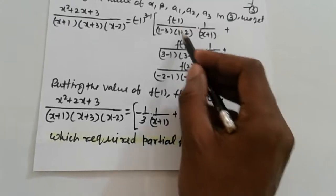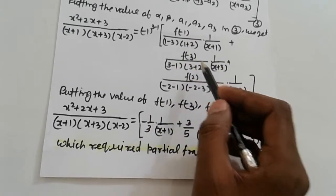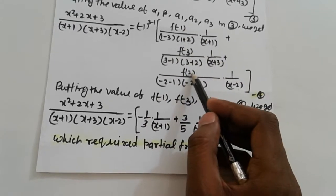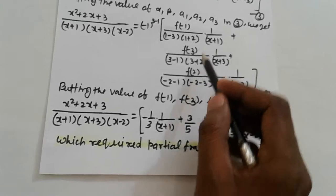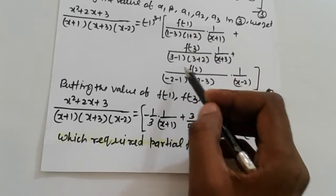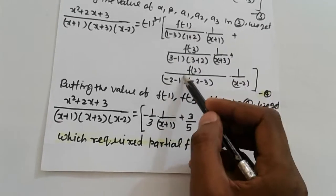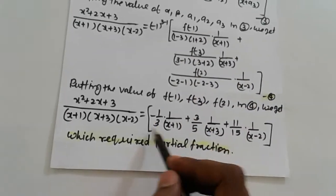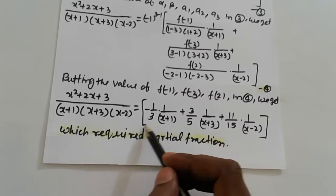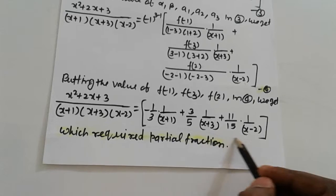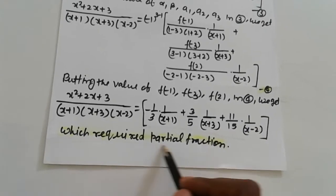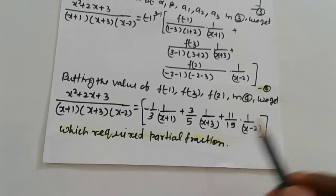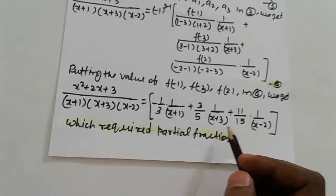Simplifying by putting the values of f of minus 1, f of minus 3, and f of 2, we get the final result, which is the required partial fractions. Thank you.